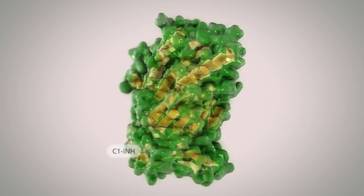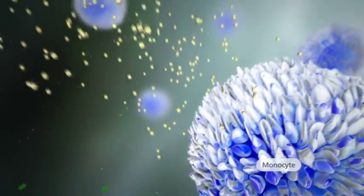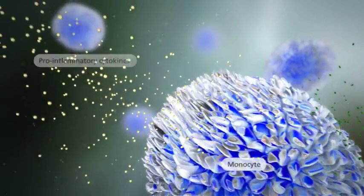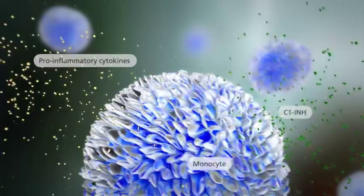C1 inhibitor is synthesized predominantly in the liver, but also by monocytes and other cells in response to pro-inflammatory cytokine stimulation.